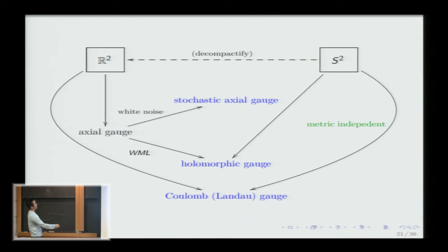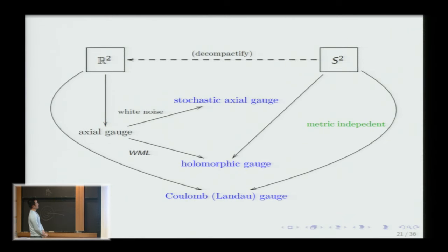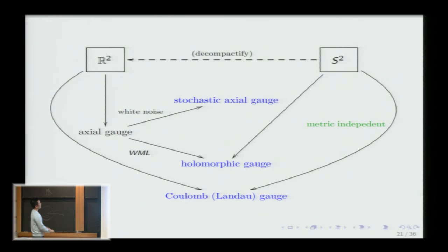Using this setup, I can prove metric independence of the Coulomb gauge-fixed Wilson loop expectation values using Kevin Costello's BV machinery. Now let me move on to stochastic axial gauge.